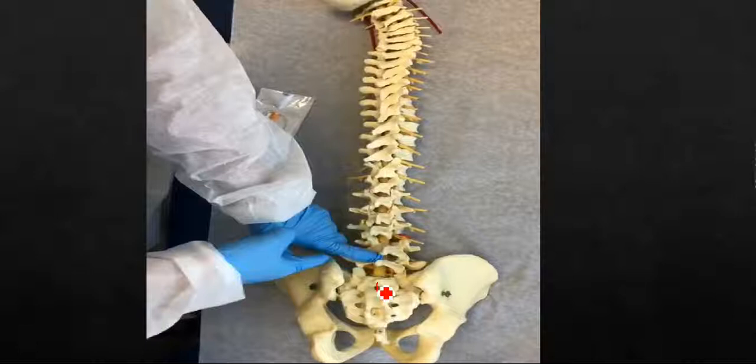First you're going to palpate S1, then you're going to go two finger breadths lateral to that, and then you're going to go two finger breadths superior to that. This point will be the entry point to test for S1. Then superior to that will be L5, superior to that will be L4. So this is basically how you start.